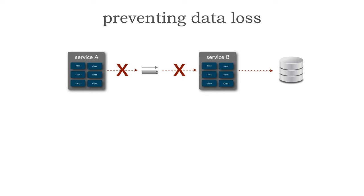The third area is when service B, who has that data, tries to get it into the database, but some sort of database error occurs. Again, the data from service A is lost. Now let's see how to actually prevent this data loss.